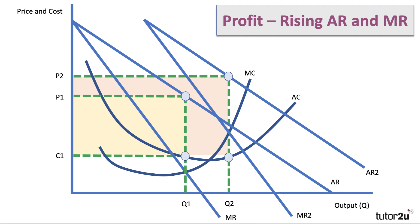So an increase in demand can lead to quite a sizable increase in monopoly profit, because the firm is able to charge a higher price — perhaps because there are more consumers in the market who are willing and able to pay. That diagram shows an increase in demand and its impact on profits.